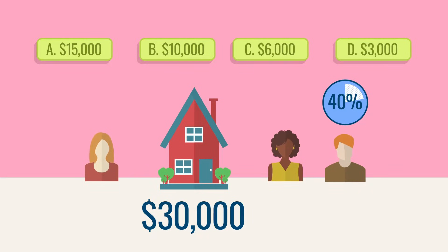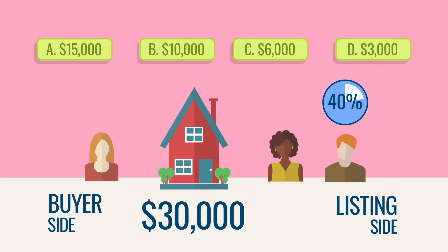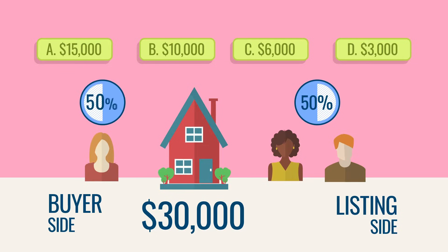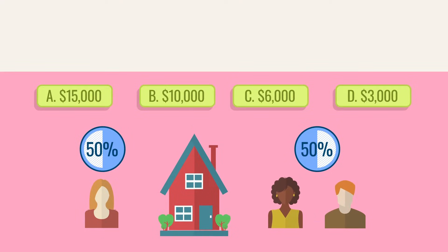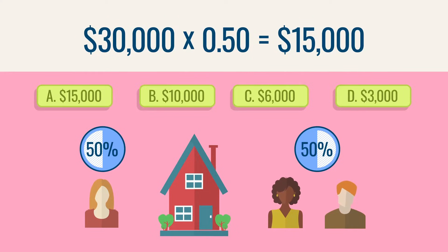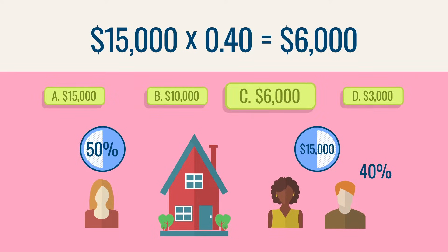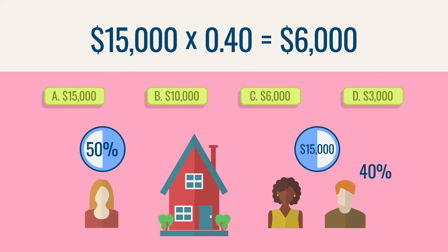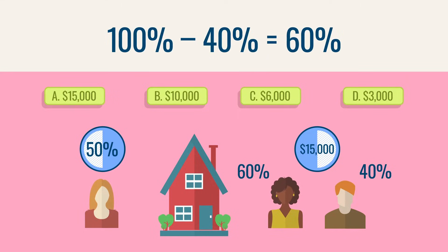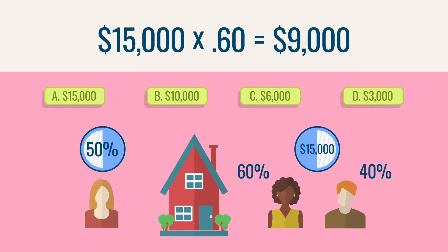When two brokers cooperate on a sale, they're often referred to as the listing side and the buyer side. In this question, split evenly means each side gets half of the total commission. Start by multiplying the commission by 50%: $30,000 times 0.5 equals $15,000. The listing side receives $15,000. The salesperson gets 40% of that: $15,000 times 0.4 equals $6,000. The answer is C, $6,000. A variation asks for the listing broker's share — since the salesperson gets 40%, the broker gets 60%: $15,000 times 0.6 equals $9,000.